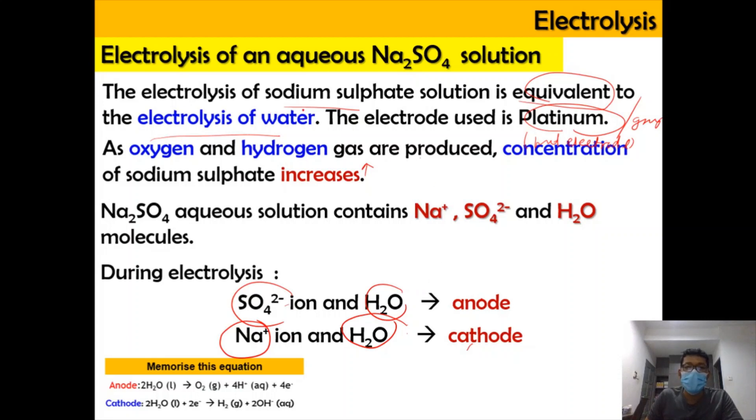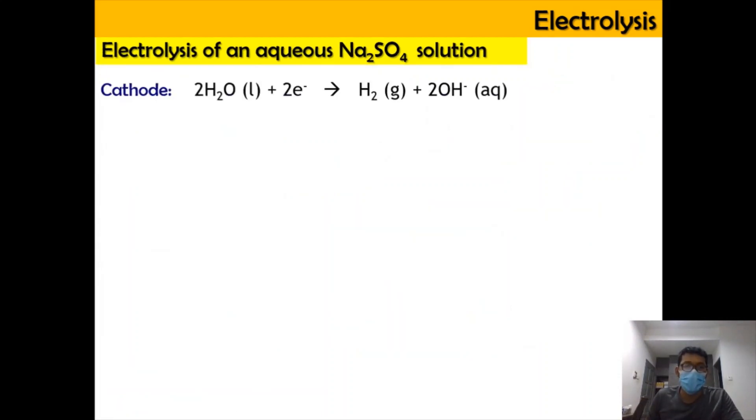We know that during the electrolysis, the water and the anion will go to anode and Na+ ion as well as water will go to cathode. However, we know that the product will be the same as the electrolysis of water as in the previous slide. H2O will be selected at anode and H2O will be selected at cathode. Because H2O is decreasing, then we know that the Na+ and sodium sulfate concentration going to go higher. These two equations you need to memorize.